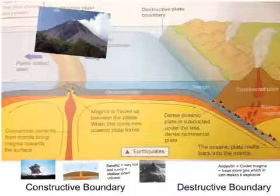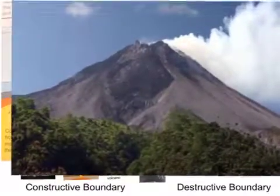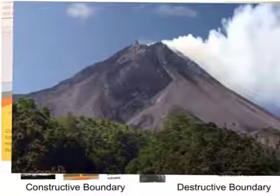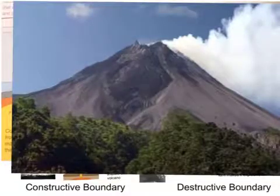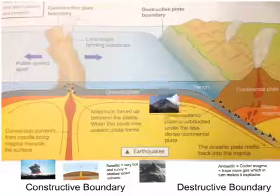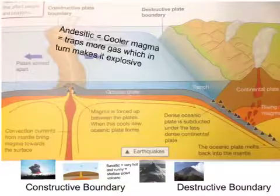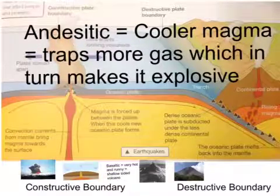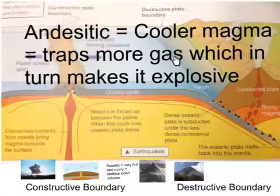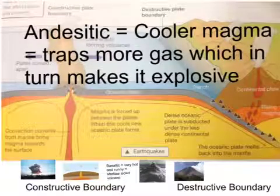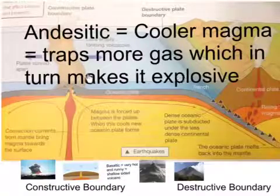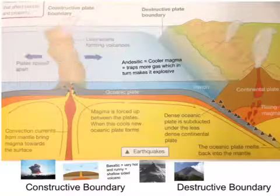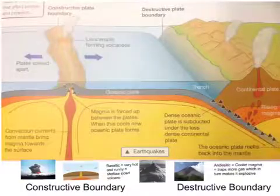Here are a couple of examples — this one is in Ecuador, which lies on the South America–Nazca plate boundary, and you can see the steep-sided nature of those volcanoes. To recap: at a destructive plate boundary you get andesitic magma, which is slightly cooler, traps more gas and steam because it traps water as well. This makes it more explosive, and it cools a lot quicker so the magma doesn't flow down the sides — giving you steeper-sided volcanoes.